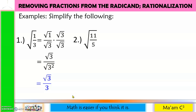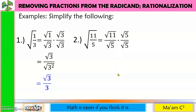Next is the square root of 11/5. Once again I will separate the numerator and the denominator. The index is 2 and the exponent of 5 is 1, so I need 1 more square root of 5. I'll multiply both numerator and denominator by the square root of 5. Square root of 11 times square root of 5 is the square root of 55. For the denominator, 1 + 1 = 2, giving the square root of 5 squared. We cancel the square root and exponent 2. Final answer: square root of 55 over 5.